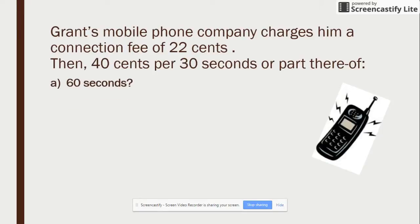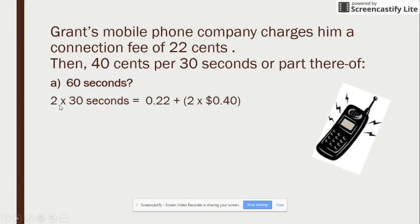So, how much does he get charged for 60 seconds? We've got to think: we know that he's going to get 22 cents always, and then he gets 40 cents for the first 30 and 40 cents again for the second 30. So, 2 lots of 30 seconds — he speaks for 40 seconds, so if he speaks into the next 30 bracket, he has to be charged. So, that's 22 cents plus 2 lots of 40 cents.